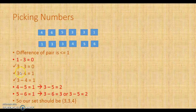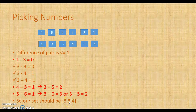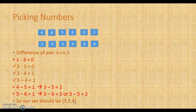So what should be the group? The set is 3, 3, and 4 — where all differences are less than or equal to 1. 3 minus 3 is 0, 3 minus 4 is 1, and 3 minus 4 is 1. So our answer should be 3, meaning a set of 3 numbers.